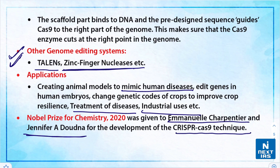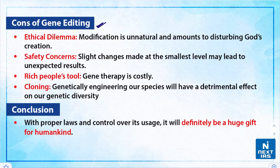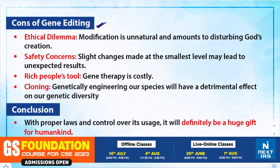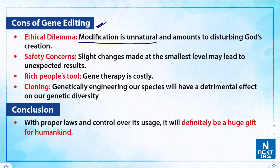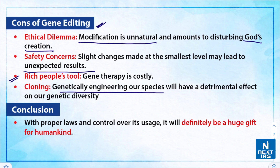Now let us discuss some negatives of gene editing. First, there are ethical concerns: using CRISPR Cas9 to alter human genomes is considered unnatural and amounts to disturbing nature's creation. There are also safety concerns, as slight changes at the smallest level may lead to unexpected results. Moreover, gene therapy is costly, making it accessible only to the wealthy. Additionally, genetically engineering our species could have a detrimental effect on genetic diversity.